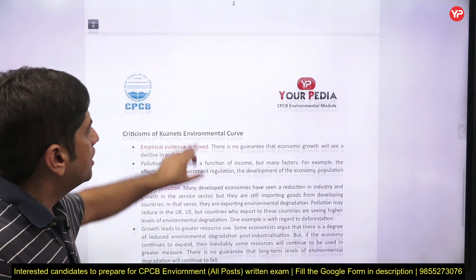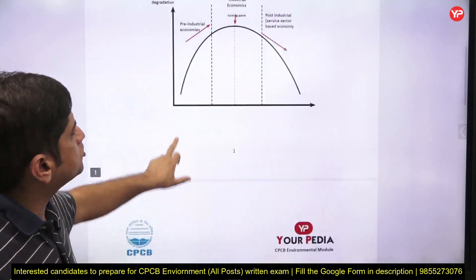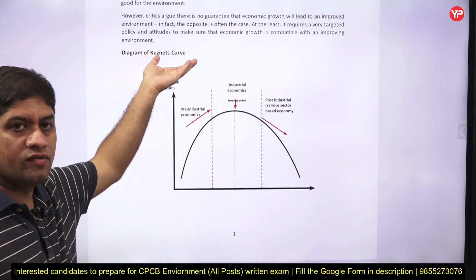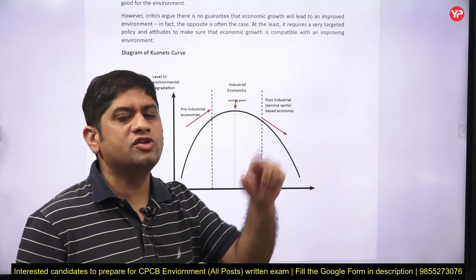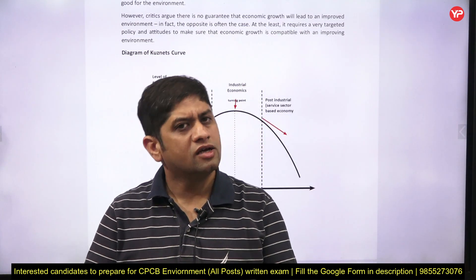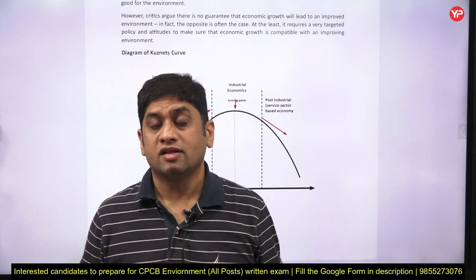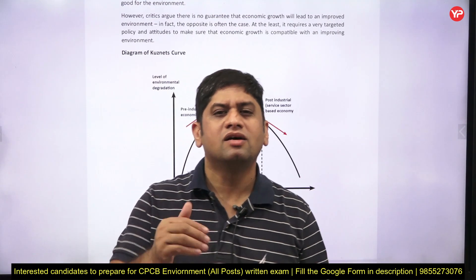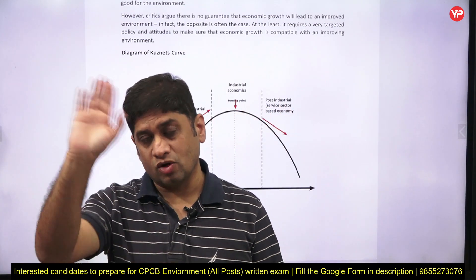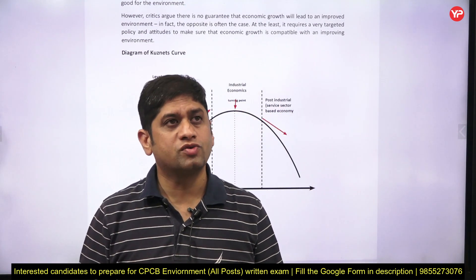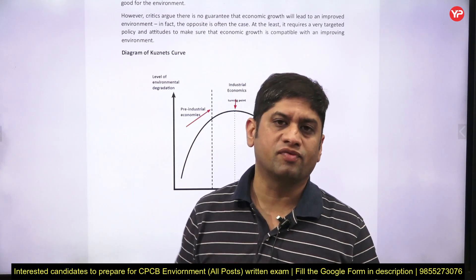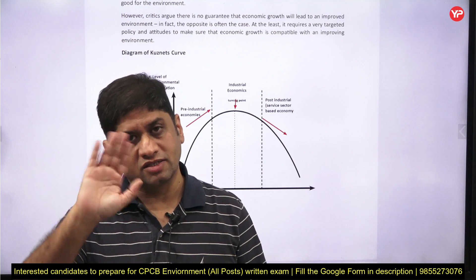In conclusion, you cannot determine environmental outcome based on one parameter alone, but for the exam if the EKC curve comes up, you should know that the relationship between economic development and environmental degradation is an inverted U-shaped curve. This is a current topic related to environment and the kind of question you can expect in the Central Pollution Control Board exam. You can take notes from your PDIA website — all the very best, thank you.